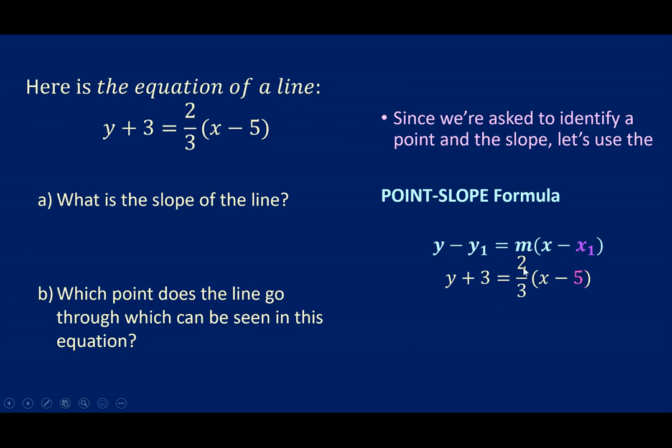So just comparing the two equations, or the equation with the general formula, we can identify that the slope is 2 thirds and the point is 5, negative 3.